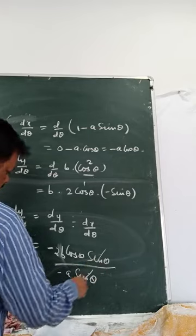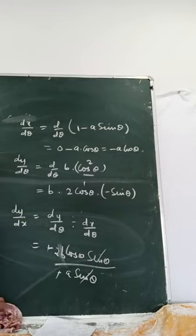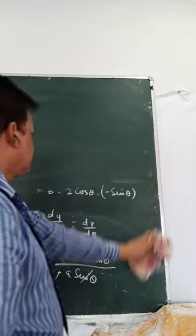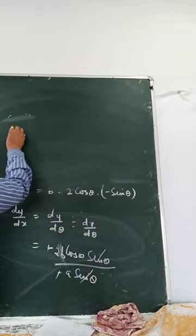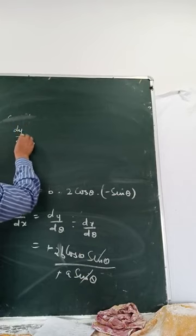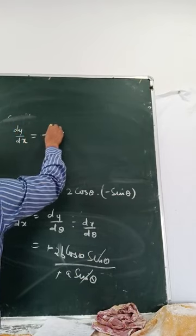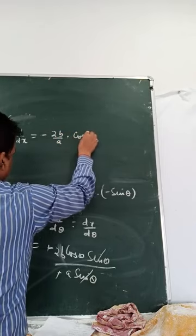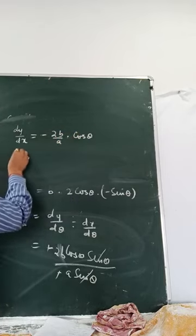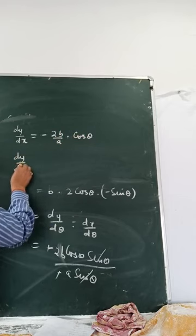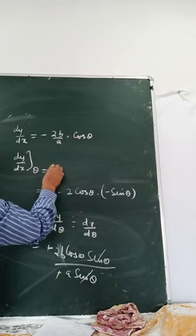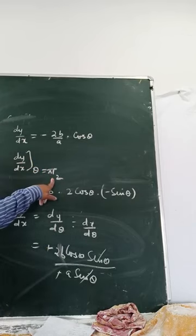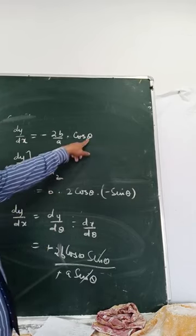The negatives cancel, and sine theta cancels, so dy by dx equals 2b cos theta divided by a. Now dy by dx when theta equals pi by 2: put pi by 2, so cos(pi/2) equals 0.